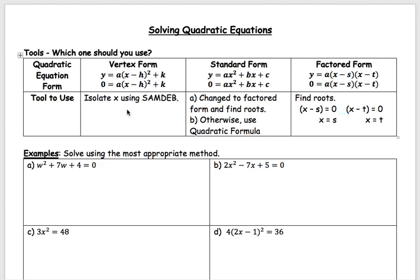For standard form, you change it to factored form and find the roots. If you cannot factor it, we learned a new tool called the quadratic formula and you use that instead. If you can get it to factored form, equate each factor to zero and solve for x. Be careful with ones like 2x + 1 — you solve your way out to get negative one-half.